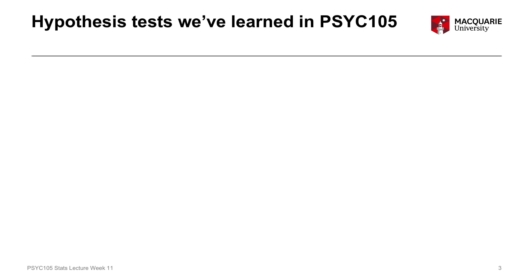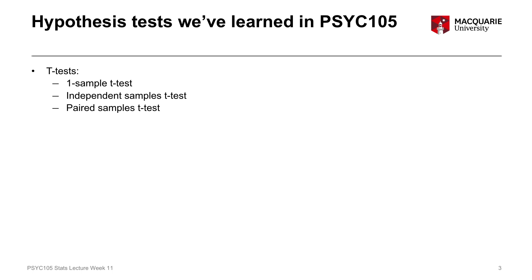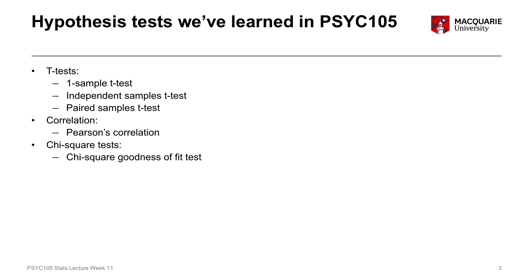We've learned a lot of different kinds of tests in PSYC 105 so far. We started with three different kinds of t-tests: the one-sample t-test, the independent samples t-test, and the paired samples t-test. We then moved on to correlations and did the Pearson's correlation. Last week we finished with chi-square tests — the chi-square goodness of fit test and the chi-square test of independence. That's six different statistical tests, which can feel a little overwhelming.